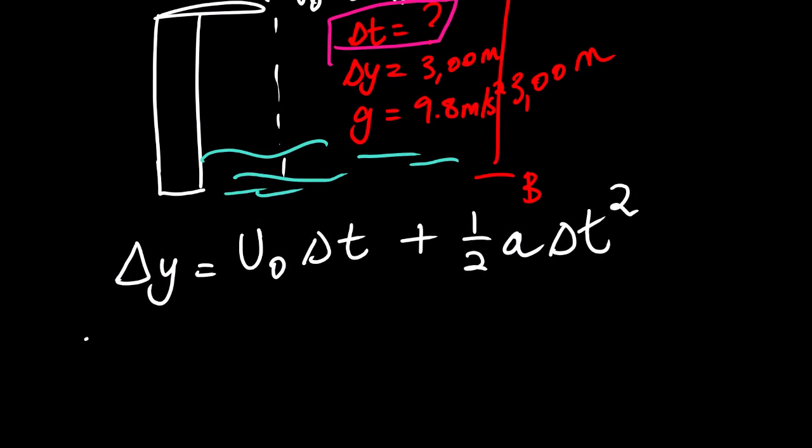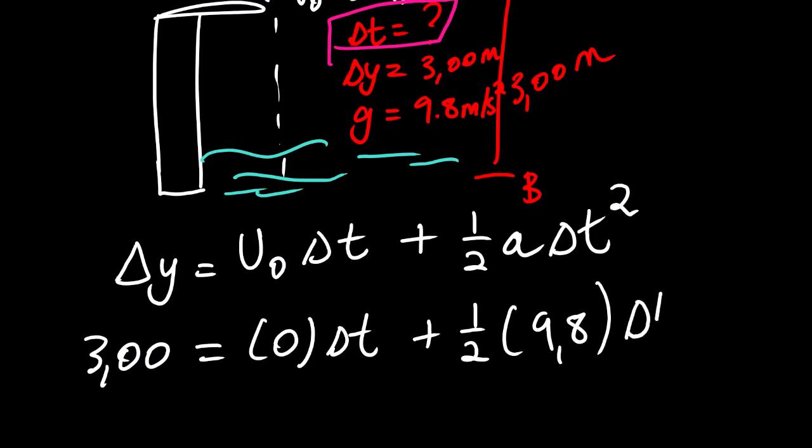Our displacement is 3.00. It equals initial velocity, we have zero, times change in time, plus half times 9.8 times change in time squared.